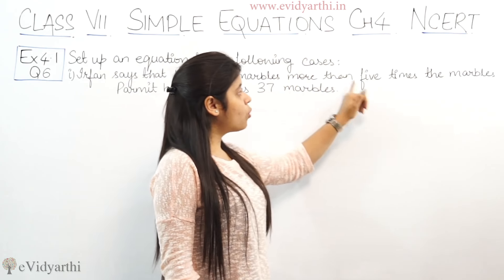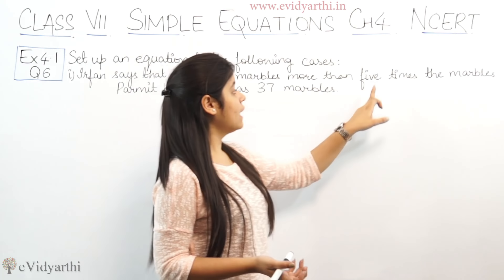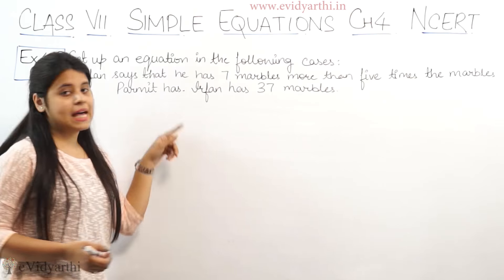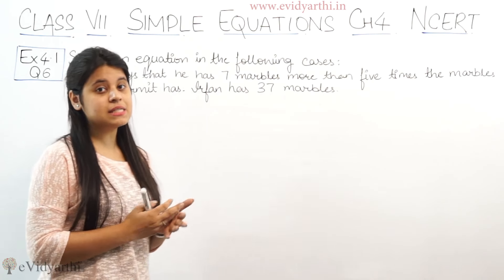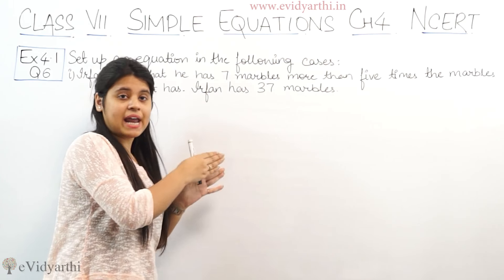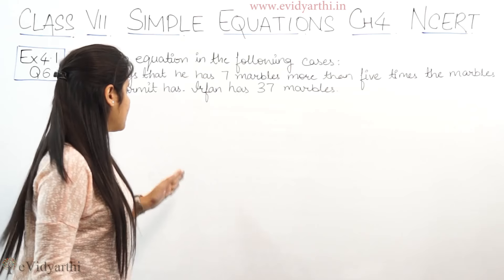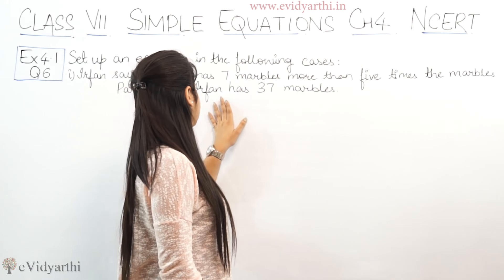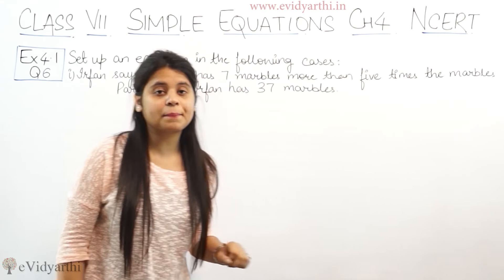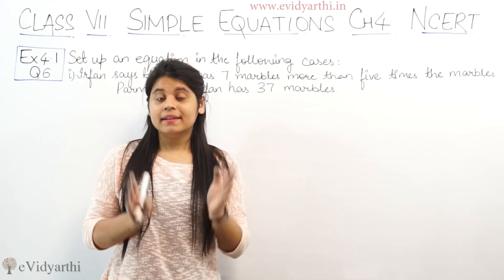7 marbles more than 5 times the marbles Parmit has. Jitni Parmit ke paas marbles hain, uska 5 times agar hain kar dein aur usme bhi 7 add kar dein, toh utni marbles hain Irfan ke paas. Now, at the end it is given that Irfan has 37 marbles. Matlab ki last mein hi bata rakha ke Irfan ke paas kitni marbles hain? 37.